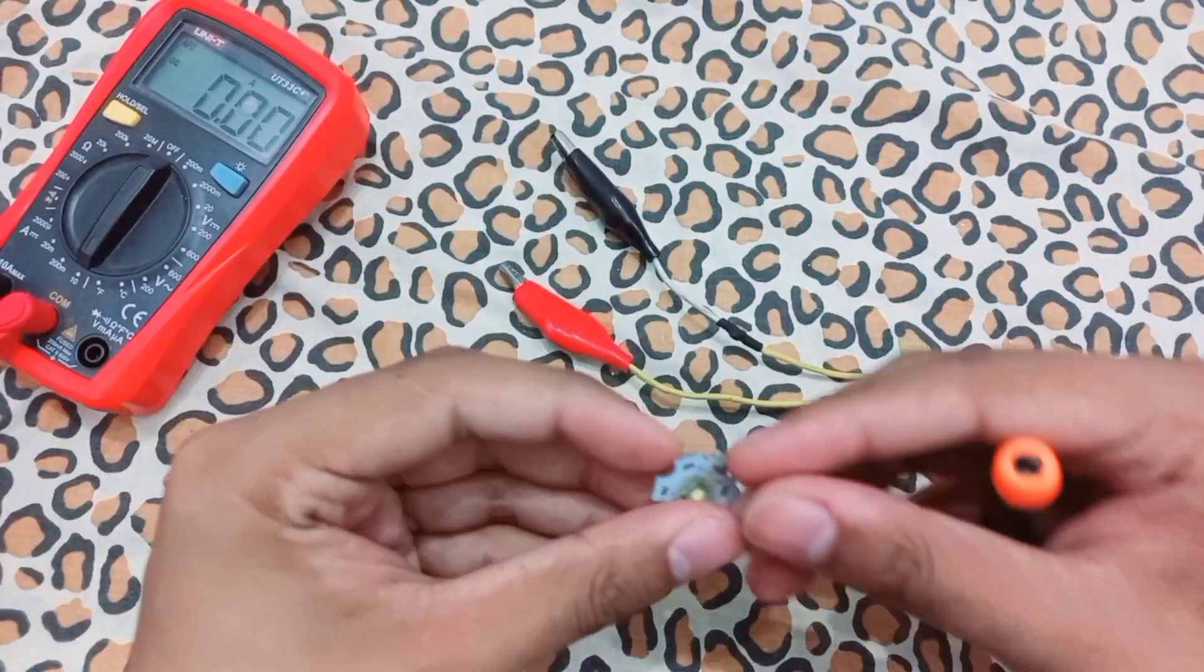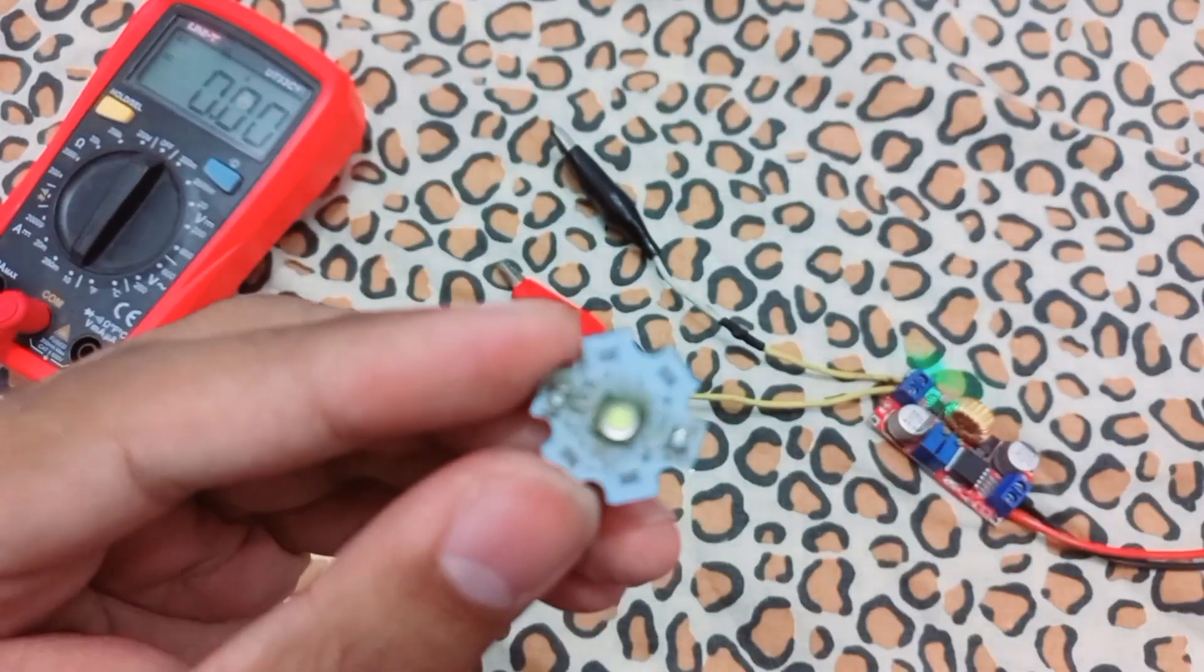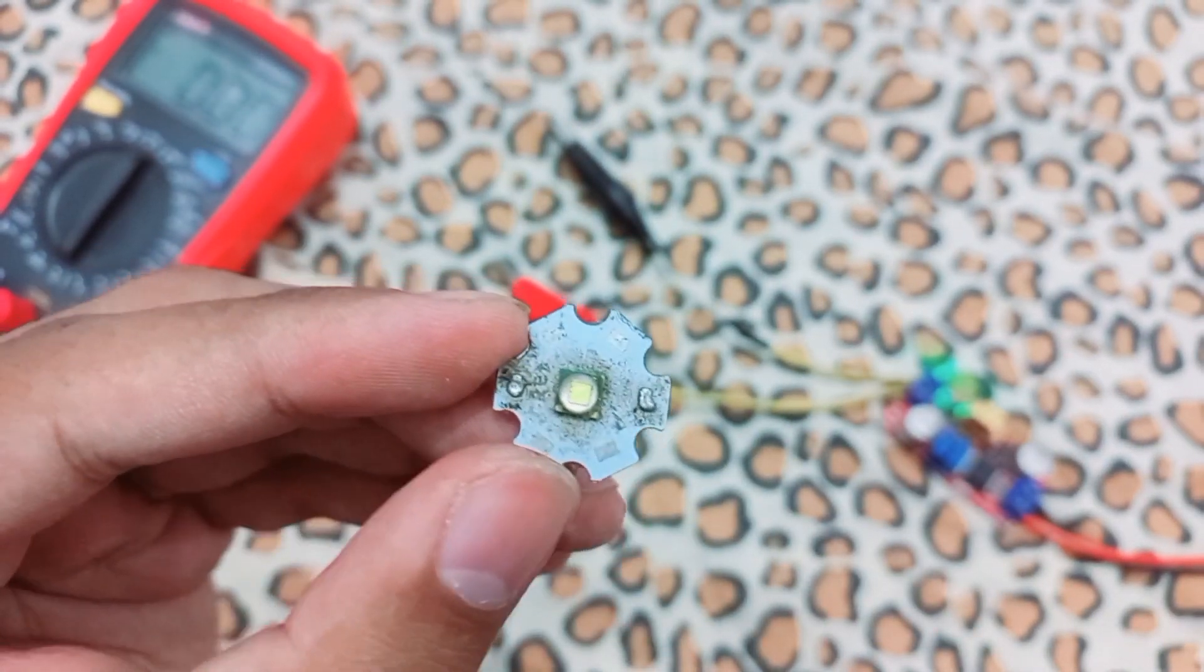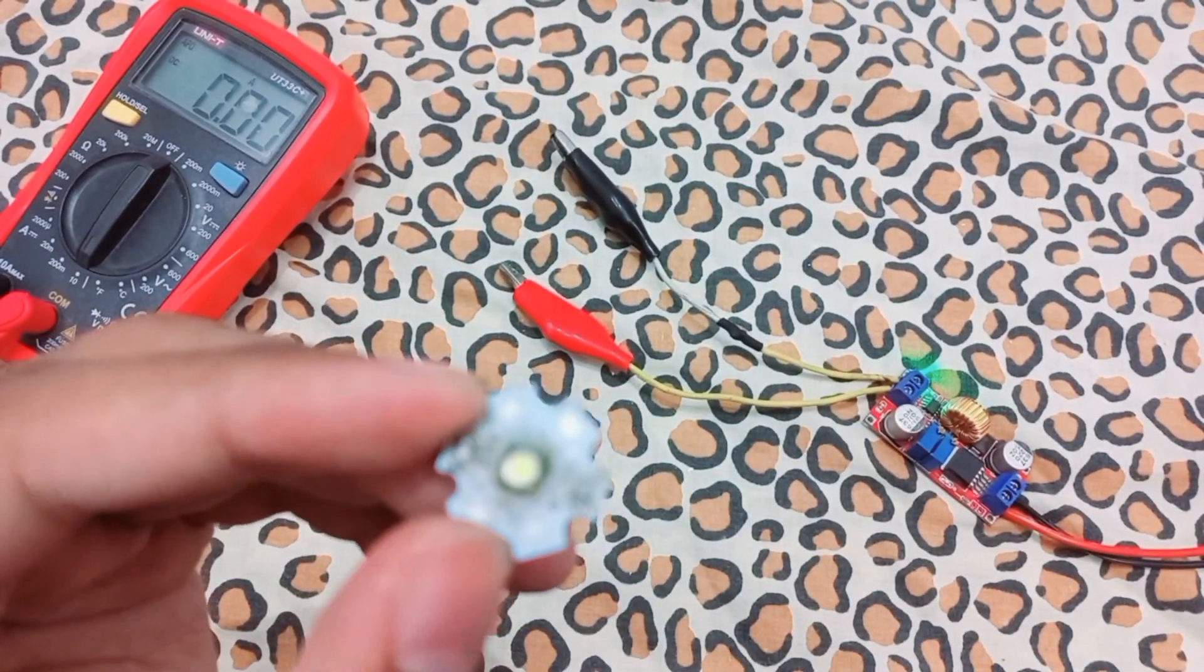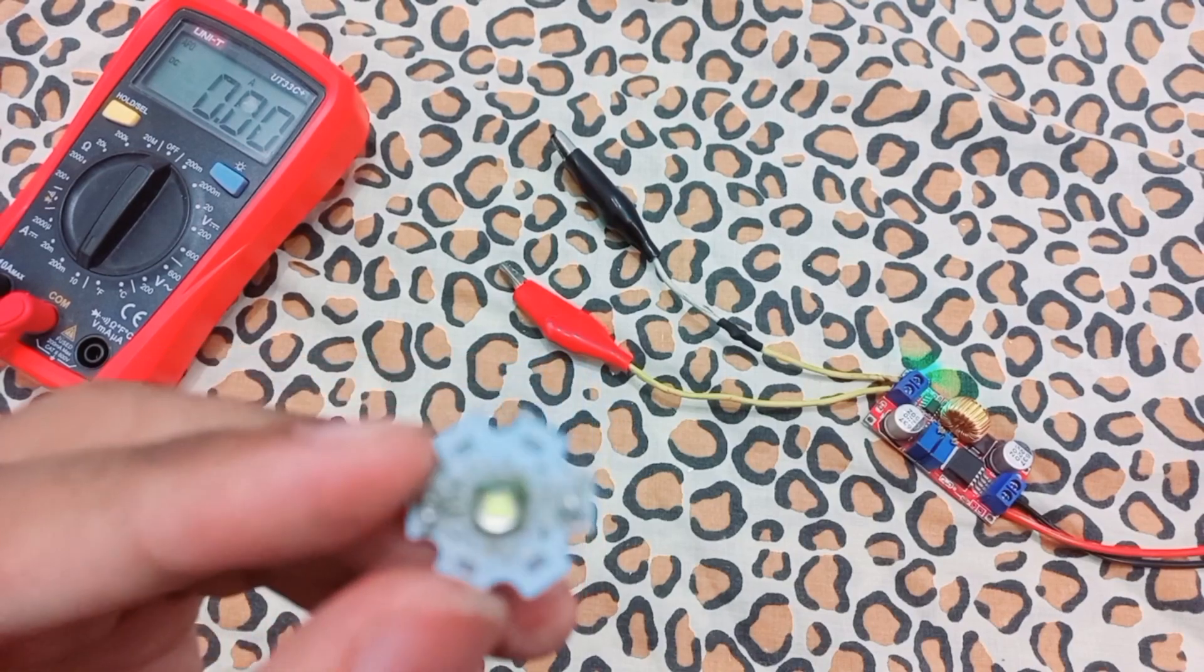This is the local Cree XML LED, 5 to 10 watts rating. At maximum 3.7 to 3.8 volts it operates on maximum 3 ampere. At 4 to 5 amps it can blow up.